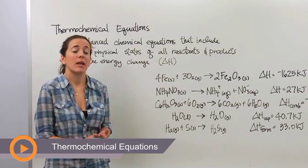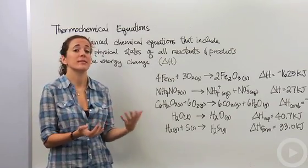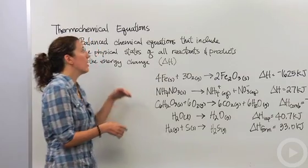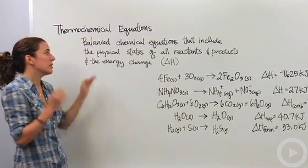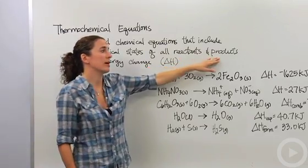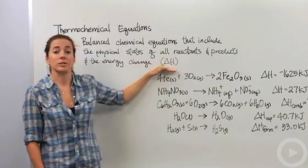Sometimes when you're dealing with balanced chemical equations, you're going to want to include the amount of energy that's either being absorbed or released in that reaction. So we're going to call those thermochemical equations, and they're balanced chemical equations that include the physical states of all reactants and products, which they should always have, and the energy change, or we're going to call this delta H or enthalpy change.